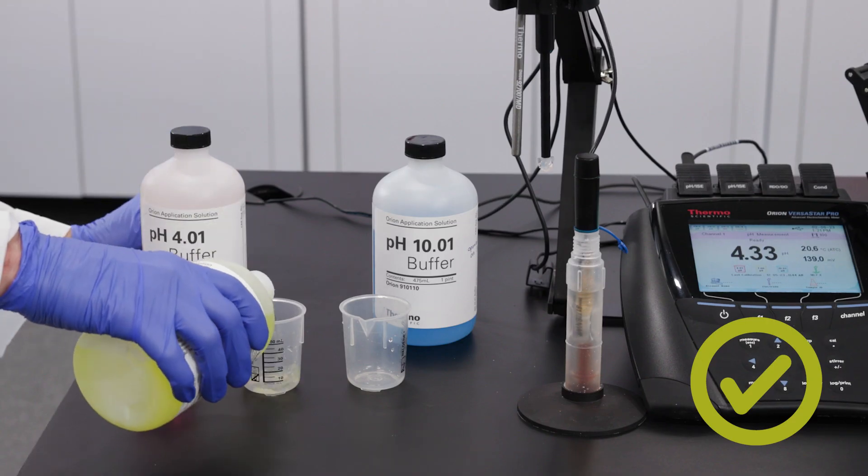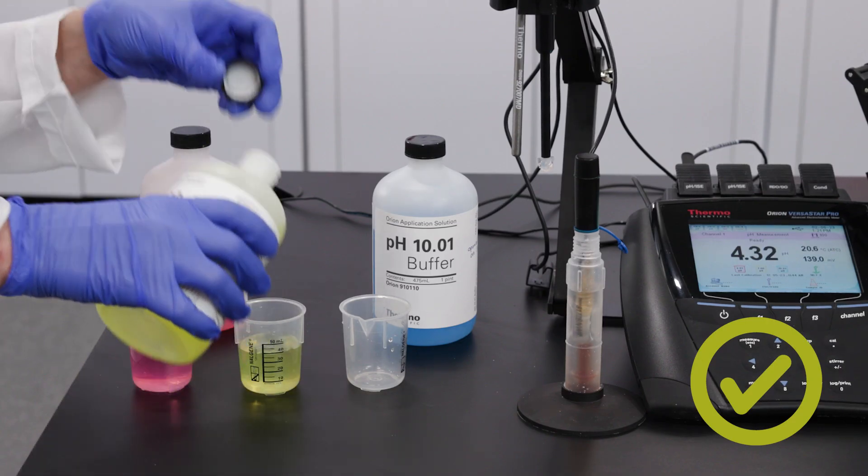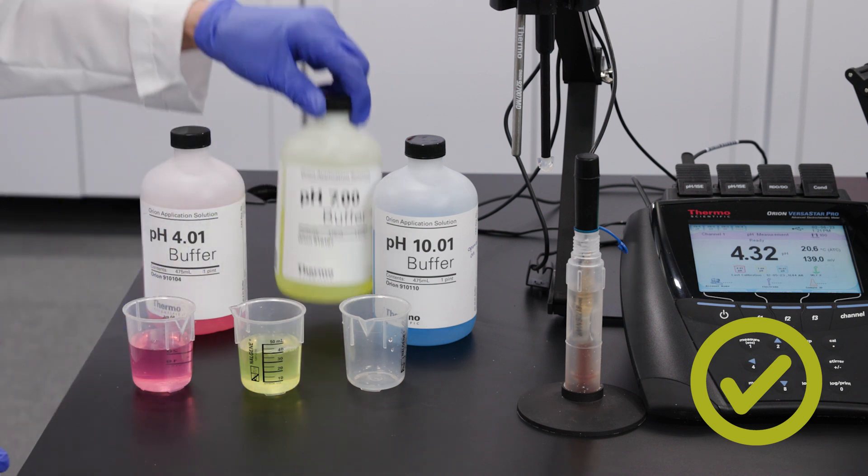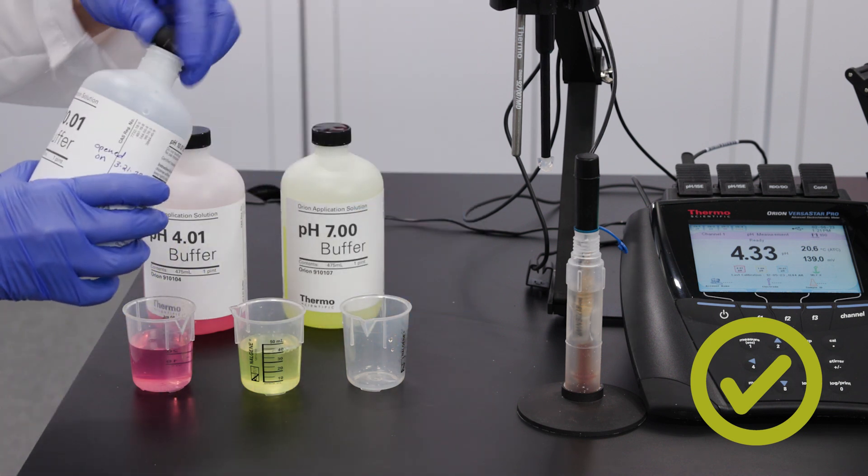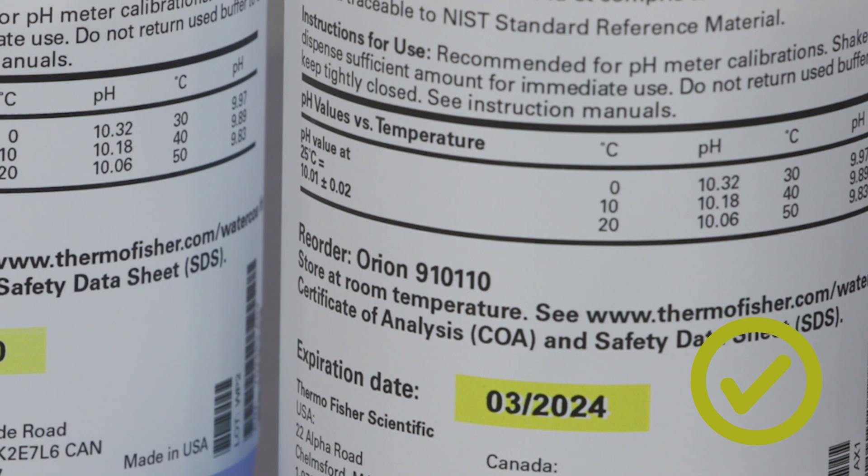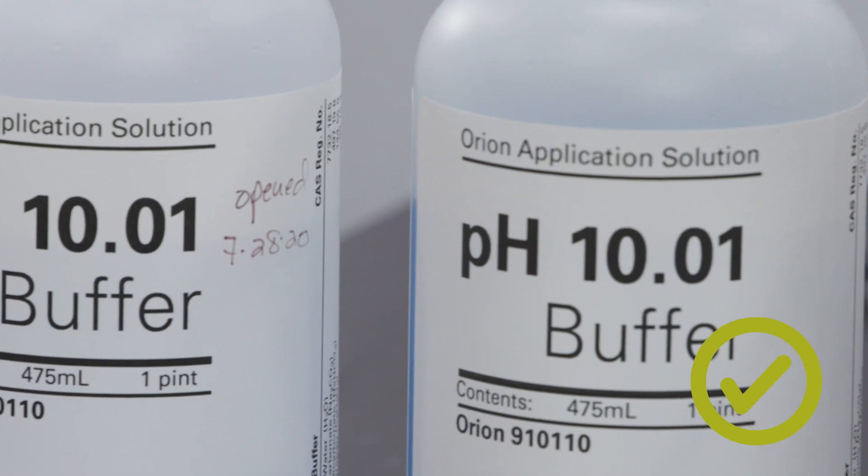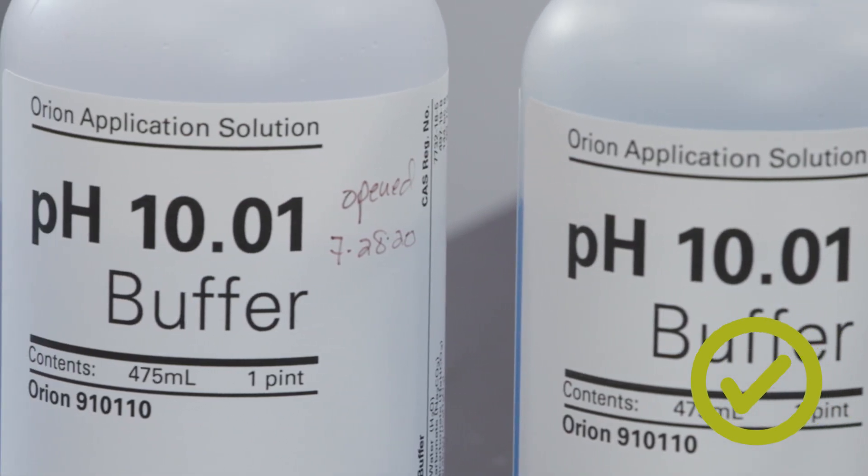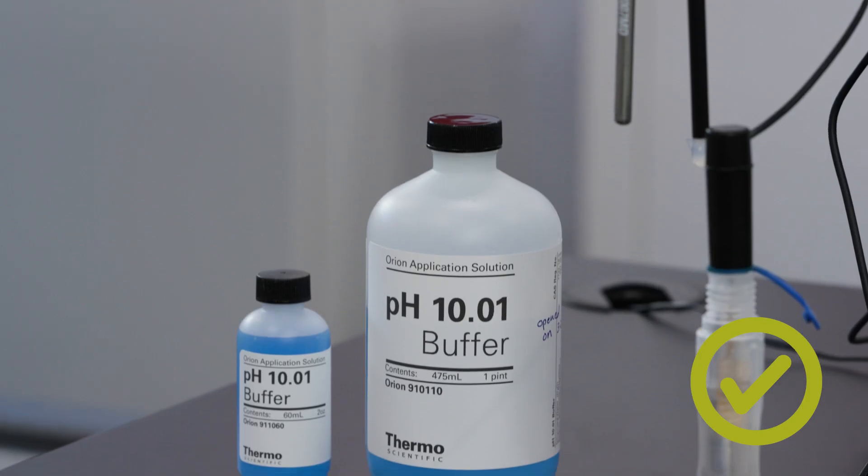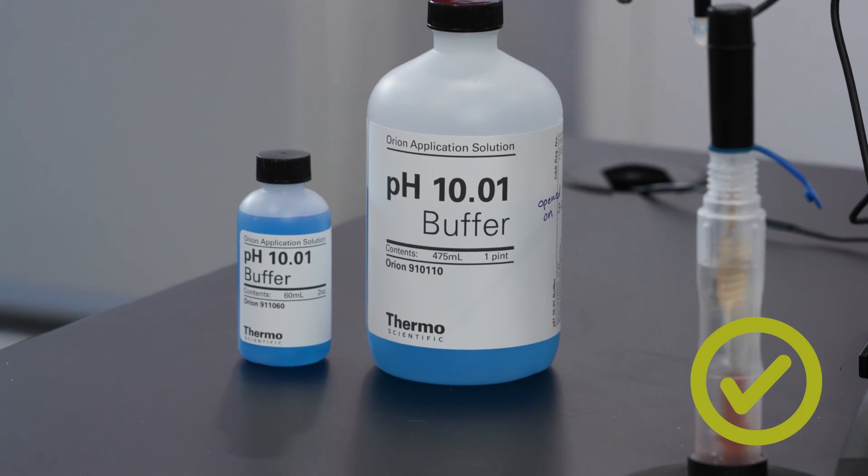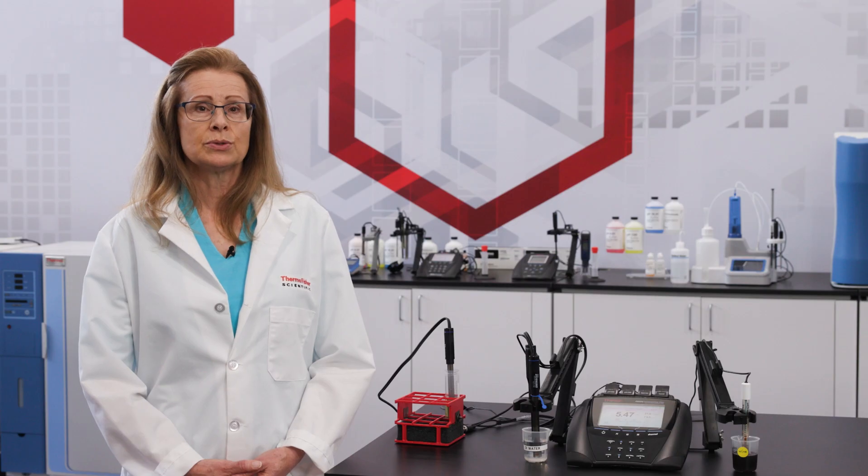To avoid these issues, pour fresh buffers into clean beakers. Use and dispose of them at the end of the day. Check the expiration date and the opened on date, especially for pH 10. Discard any expired or compromised buffers. Buy buffers in smaller bottles if needed. Store pH buffers tightly closed and away from heat and light.